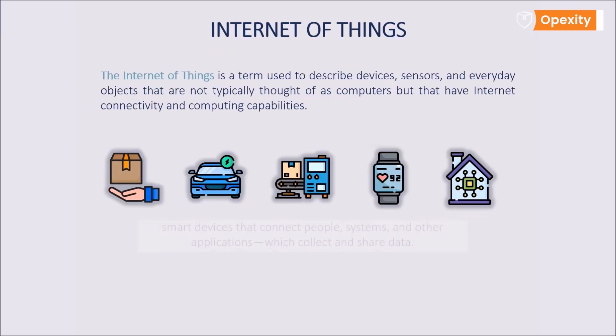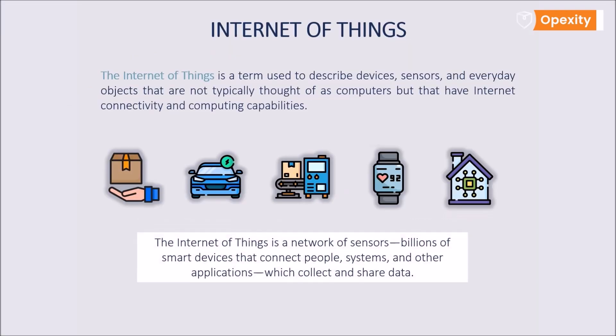So, the Internet of Things is a network of sensors — billions of smart devices that connect people, systems and other applications, which collect and share data.